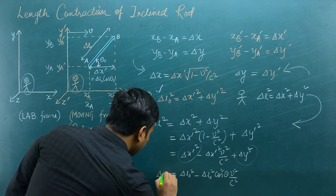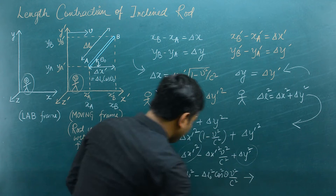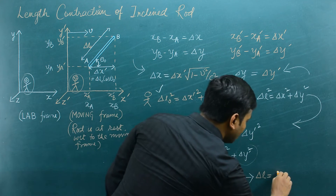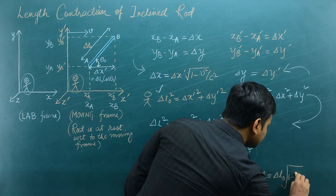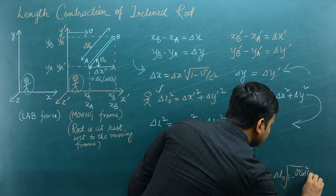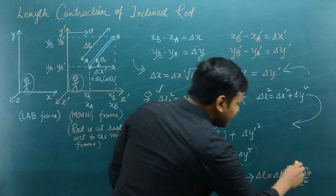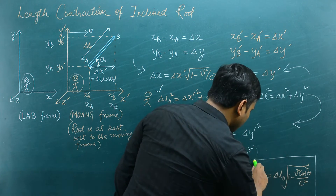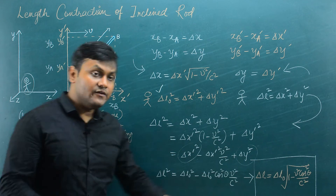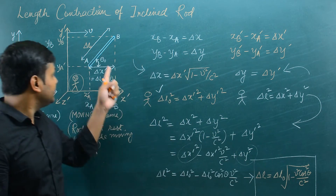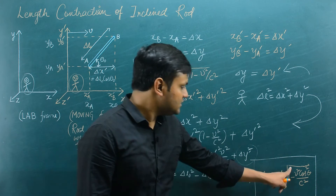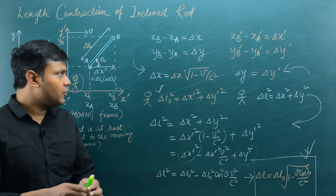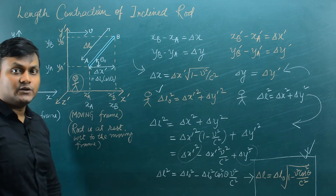Applying this, Δx dash² v²/c² becomes Δl₀² cos²θ₀ v²/c². This gives the expression for the relativistic length: Δl = Δl₀ √(1 − v² cos²θ₀ / c²). This is the relativistic formula for length contraction of a rod moving at an angle with respect to the direction of relative motion. Here Δl is the magnitude of the relativistic length as measured by the lab frame, Δl₀ is the proper length as measured by the observer in the moving frame, and √(1 − v² cos²θ₀ / c²) is the general length contraction factor for any rod traveling in an inclined direction.